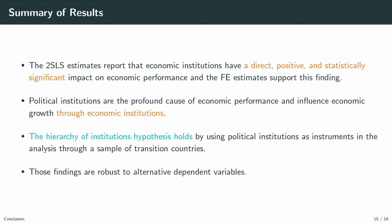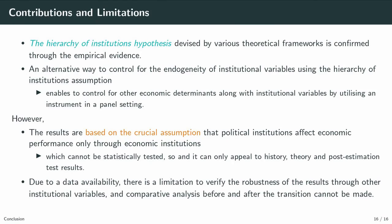To briefly summarize the results: the two-stage least squares estimates report that economic institutions have a direct, positive, and statistically significant impact on economic performance, and the fixed-effect estimates support this finding. Political institutions are the profound cause of economic performance and influence economic growth through economic institutions. The hierarchy of institution hypothesis holds by using political institutions as an instrument. However, the results are based on the crucial assumption that political institutions affect economic performance only through economic institutions, which cannot be tested statistically and can only appeal to history, theory, and post-estimation results.